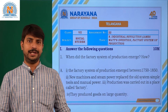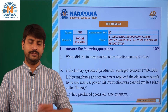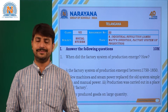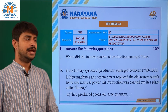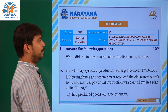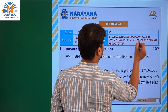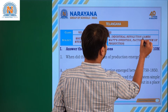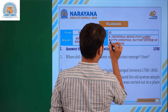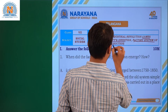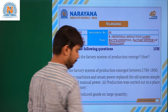Hello children, welcome to Narayana Live Classes. Today we are going to discuss the assignment key for the class 7th standard, and here we have the topic Industrial Revolution. The subtopic is about James Watt's invention and the factory system of production.